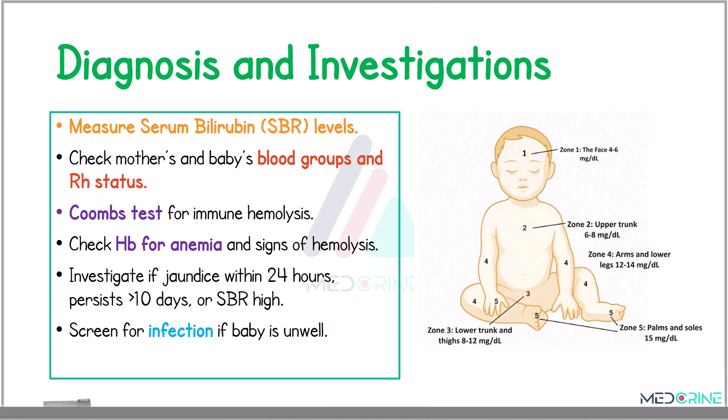To diagnose neonatal jaundice, you need to measure the serum bilirubin levels, check the mother's and baby's blood groups and Rh status for cases of Rh incompatibility, perform a Coombs test for immune hemolysis, and check hemoglobin levels in these neonates for anemia and signs of hemolysis.